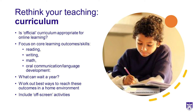You may need an alternative or variance in the curriculum that allows for online learning and students studying at home. Focus on the core learning outcomes or skills, decide what can wait in a pandemic, work out the best ways to reach these outcomes in a home environment, and include lots of off-screen activities for students — you don't want students on the screen the whole time, 12 hours a day. They need a break, so there are lots of things they could do at home that don't involve being on the computer.